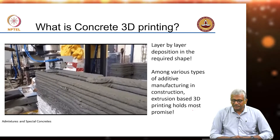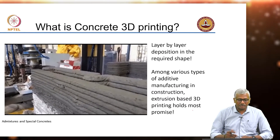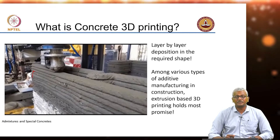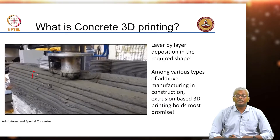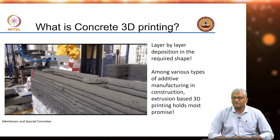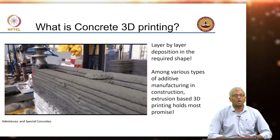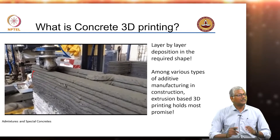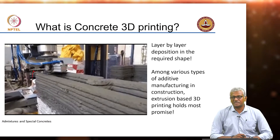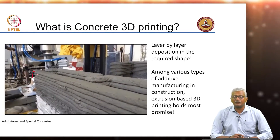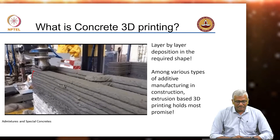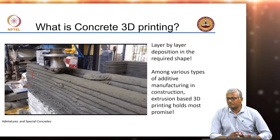Concrete 3D printing is a layer-by-layer deposition in the required shape — you can see the printer basically depositing the material. What you essentially end up with is complicated shapes created without formwork. Shapes that cannot be achieved easily, because for normal concrete, if you have to prepare formwork specifically for each shape it's going to be an expensive affair. If you're not going to be able to reuse the formwork, then economically it cannot be justified. So 3D printing can be made use of wherever you need flexibility in your design.